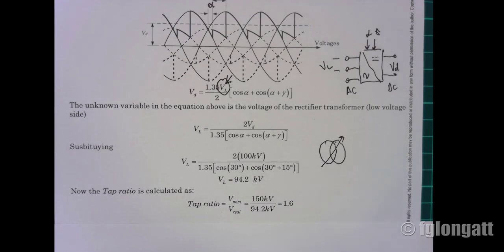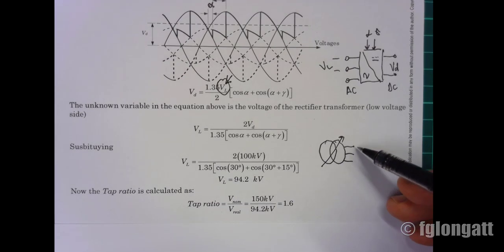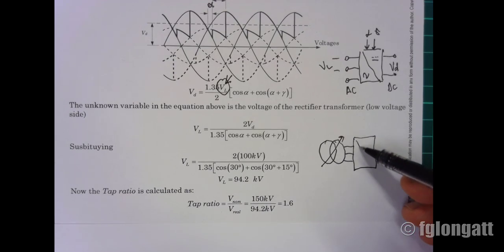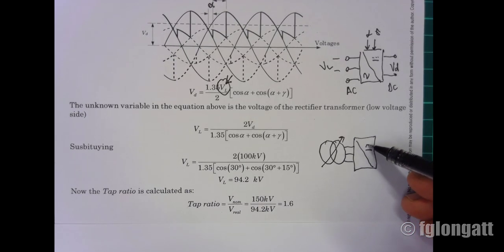What we can see is we have the DC side and the AC side. We have 100 kV on the DC side, and here we have a line-to-line voltage of 94.2 kV.